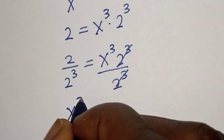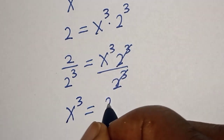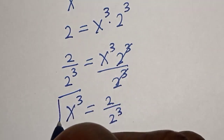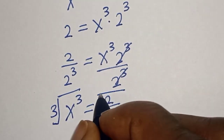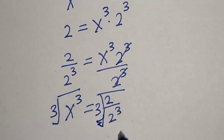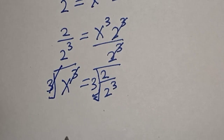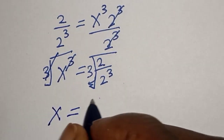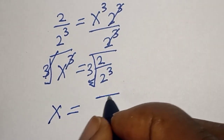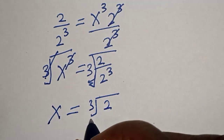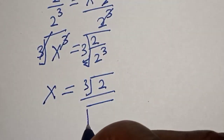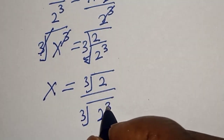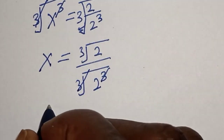Therefore s raised to power 3 is equal to 2 divided by 2 to the power of 3. Let's take the cube root of both sides. This will cancel, giving us s equals the cube root of 2 over 2 raised to power 3 — this cancels with this, and this cancels with this.